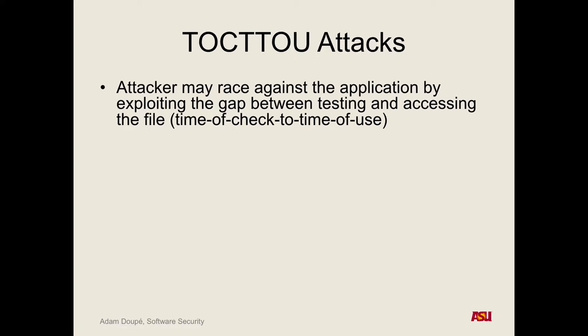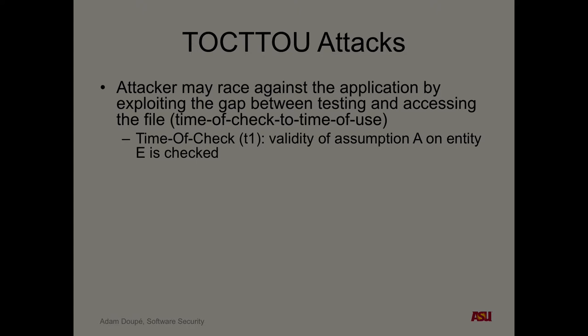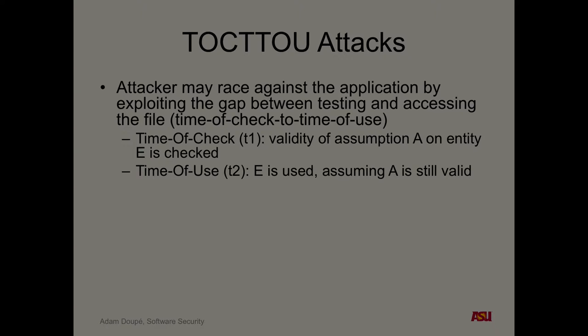If it's using strings to specify these files — if it says check the file permissions on this file with this name, this file path — and then later it opens up this file name with file path, what happens there? The idea is there's a time T1 when you're checking the security properties of something and you have some assumption A, and then at T2 you're using that entity assuming your check was still valid. There is a window of attack between T1 and T2 to invalidate that assumption.